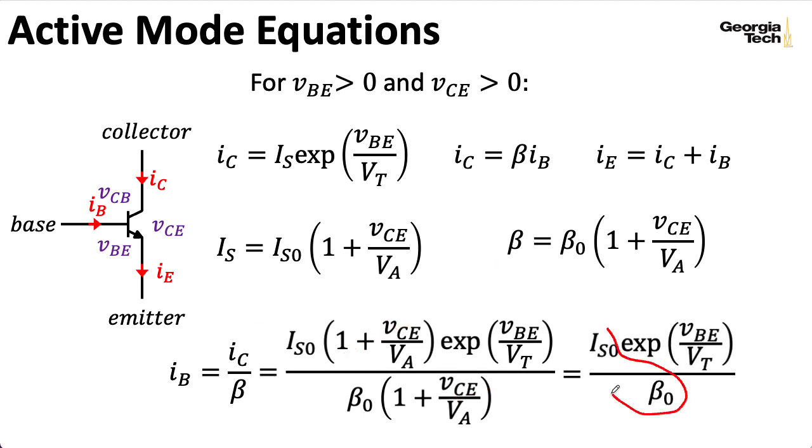So, I can write the base current like this. And notice that this is now really a constant. So, the base current is not a function of the collector-emitter voltage.